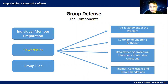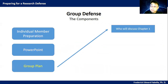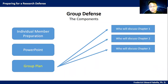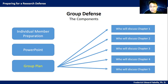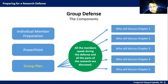Now let's go to the group plan. What should the group plan include? Who will discuss chapter one, chapter two, chapter three, chapter four, and chapter five? It's not important that you follow this exact flow — you just need to ensure that all members speak, they all have a chance to speak, and all the parts of the research are discussed.